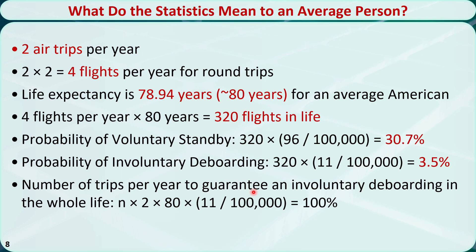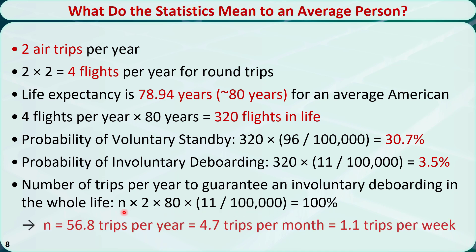Now let's calculate the number of trips per year I would need to guarantee a 100% probability of being involuntarily deboarded in my whole life. Let's denote this number by n. The round trips double the number of flights, times 80 years, times the involuntarily bumped passenger rate of 11 over 100,000, set equal to 100%, and solve for n. n equals 56.8 trips per year — or 4.7 times per month, or 1.1 times per week — so I would get dragged off the plane once in my lifetime.